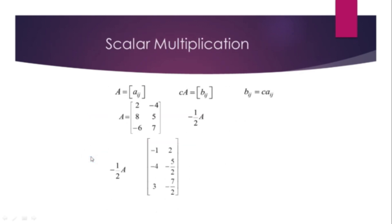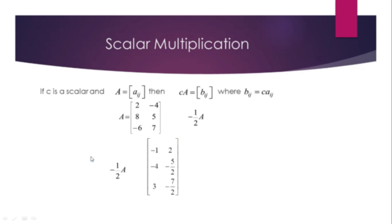Scalar Multiplication: If c is a scalar and A = [A_ij], then cA = B = [B_ij], where B_ij = c · A_ij.